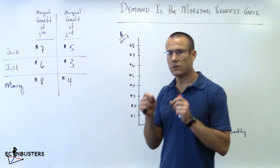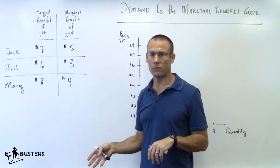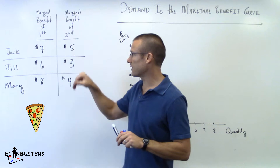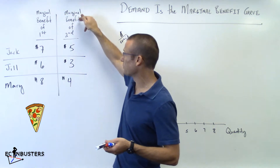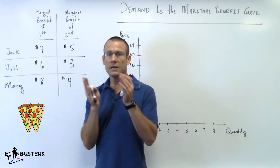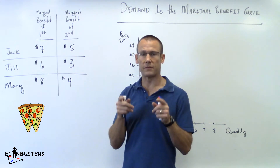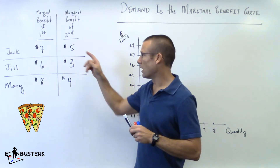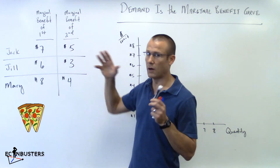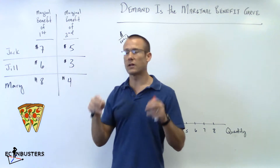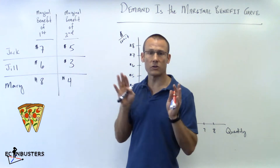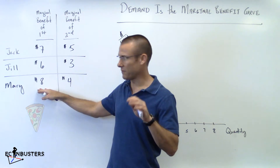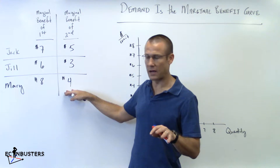I'll bring demand back later in the video. For now I just want to graph the marginal benefit curve. I've got data for three people in our marketplace: Jack, Jill, and Mary. Think in terms of slices of pizza. The marginal benefit of Jack's first slice is seven dollars — that's the max he's willing to pay. His second slice gives less benefit due to the law of diminishing marginal utility: five dollars. Jill's first slice is six dollars, second is three dollars. Mary's first slice is eight dollars, second is four dollars.